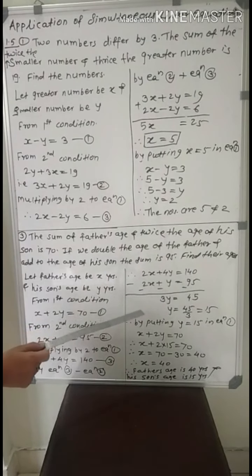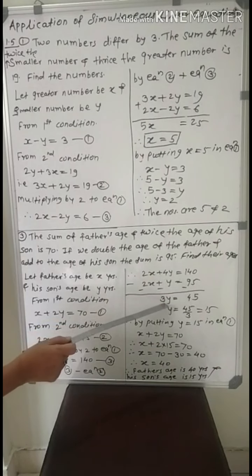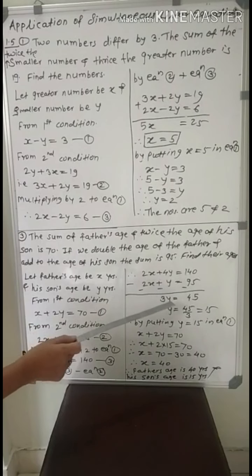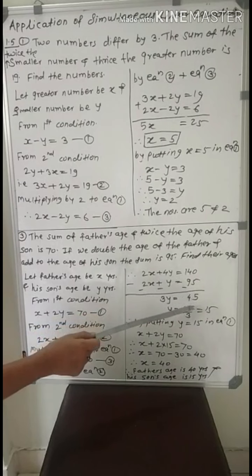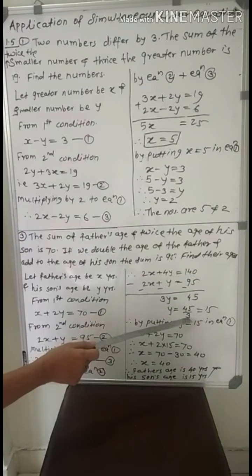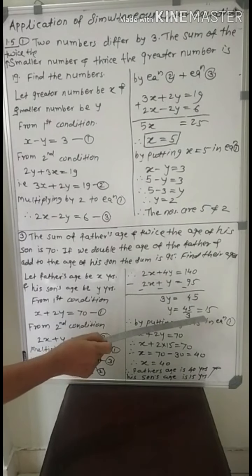So 2x minus 2x equals 0. 4y minus 1y, coefficient of y is 1, 4y minus 1y equals 3y. Equal to 140 minus 95 equals 45. So y equals 45 upon 3. By simplifying, it equals 15. So y equals 15.